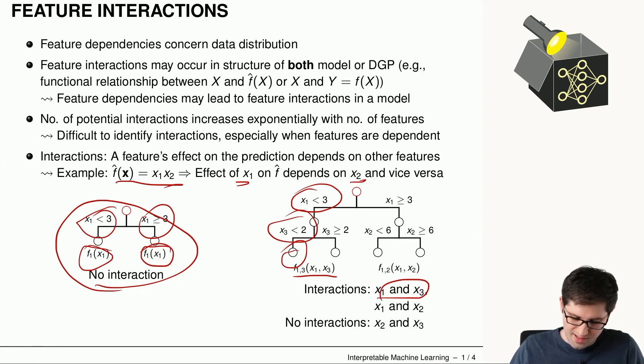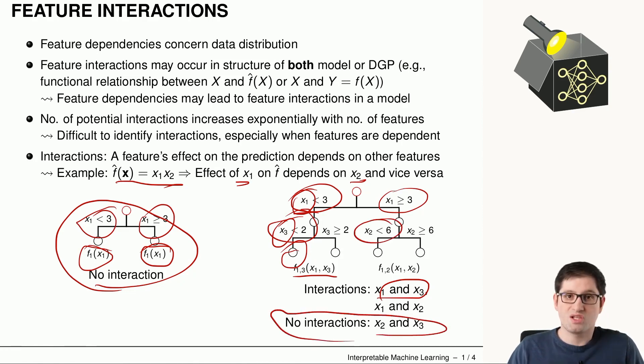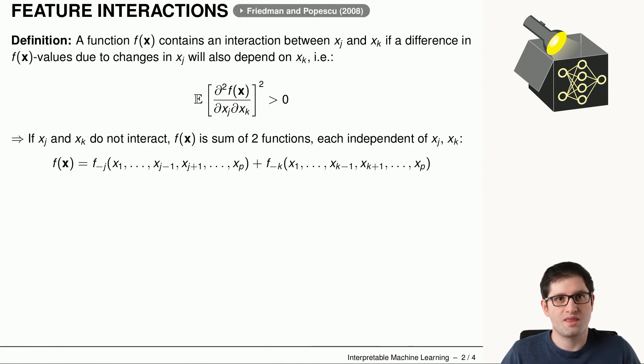And because we are splitting first on x1 and then on x3 on the left-hand side. And also between x1 and x2. Also we can see that there are no interactions between x2 and x3 because the decision tree here does not depend on these two features.